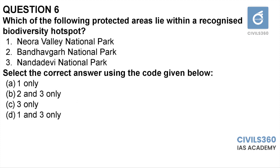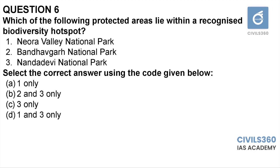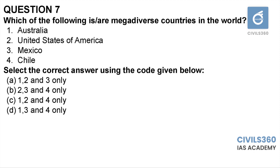Question number six: which of the following protected areas lie within a recognized biodiversity hotspot? One: Neora Valley National Park. Two: Bandhavgarh National Park. Three: Nanda Devi National Park. India has four biodiversity hotspots: Western Himalayas, Eastern Himalayas, Western Ghats, and Sundaland covering parts of Andaman and Nicobar Islands. Neora Valley National Park is close to the Eastern Himalayas, and Nanda Devi National Park is part of the Western Himalayas in Uttarakhand. Bandhavgarh is located in Madhya Pradesh and is not part of a hotspot. Therefore the answer is D, one and three only.